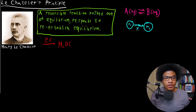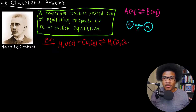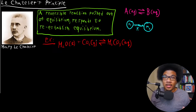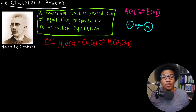Let's look at a more detailed example reaction. We have H₂O liquid plus CO₂ gas in a reversible reaction with H₂CO₃ aqueous solution. We have a heterogeneous equilibrium here. H₂O won't contribute in any meaningful way, so it really comes down to the concentration of CO₂ and how much H₂CO₃ we end up producing in our aqueous solution.